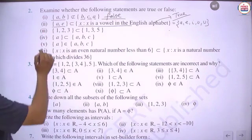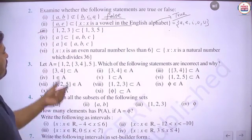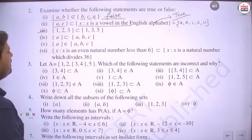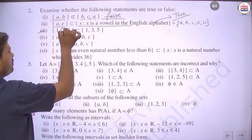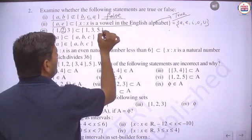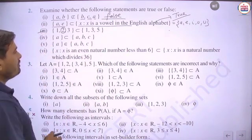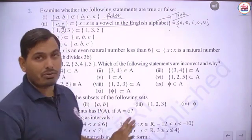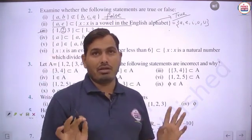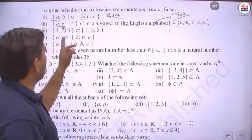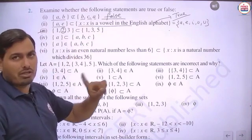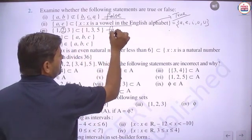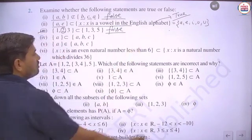Third part: {1, 2, 3} subset of {1, 3, 5}. Element 2 does not belong to {1, 3, 5}, so {1,2,3} is not a subset. The statement says it is a subset, which is false.